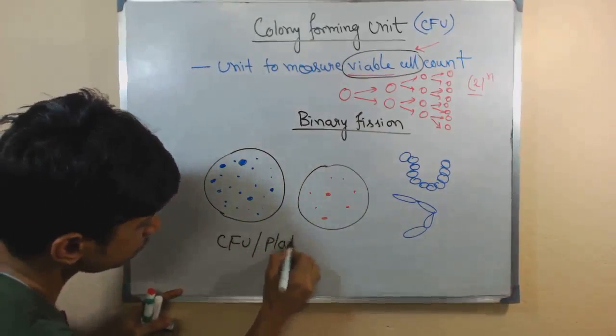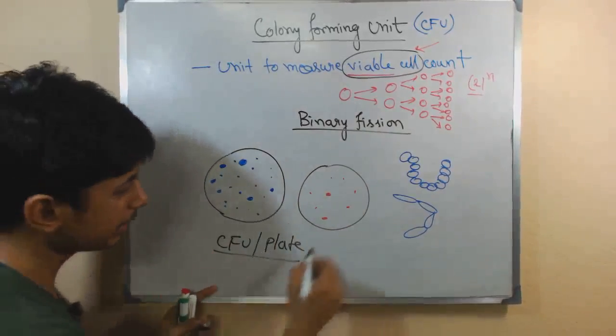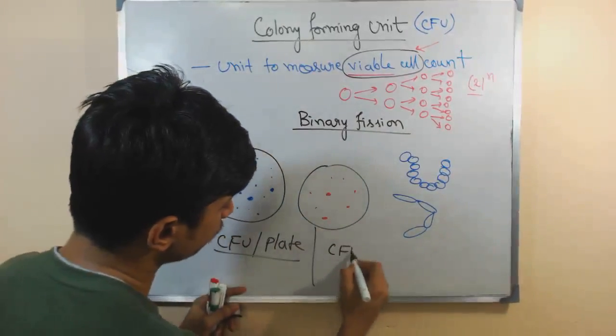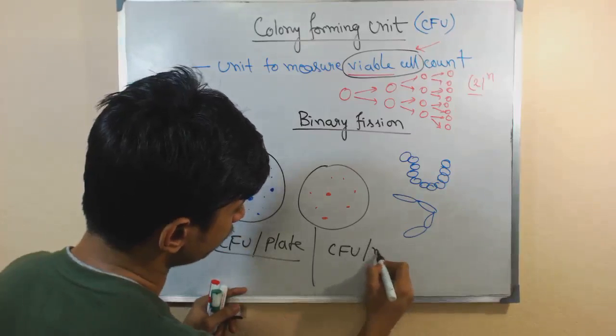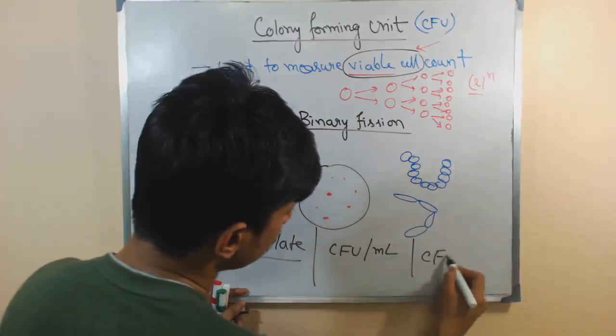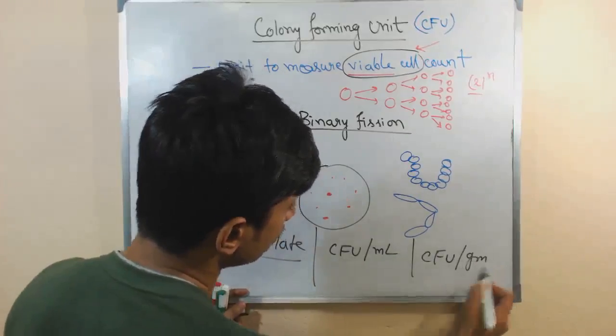So the idea here—we can measure Colony Forming Unit per plate, but that's very arbitrary. We also have CFU per milliliter, we also have CFU per gram.